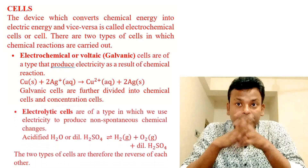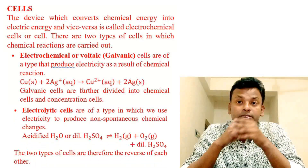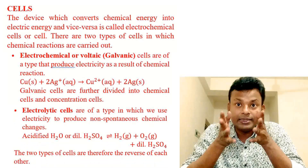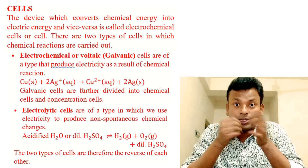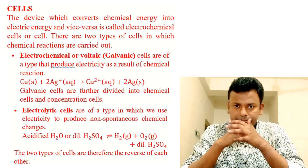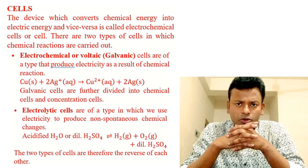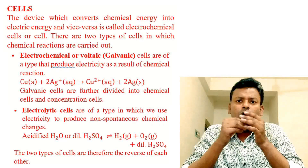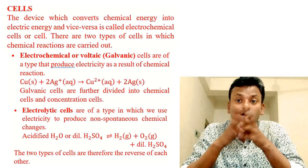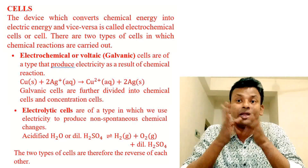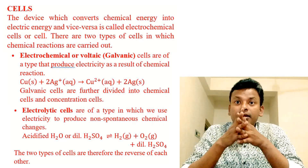Electrolytic cells are of a type in which we use electricity to produce non-spontaneous chemical reactions. For example, acidified H₂O (dilute H₂SO₄) gives H₂ + O₂. The two types of cells are therefore the reverse of each other.